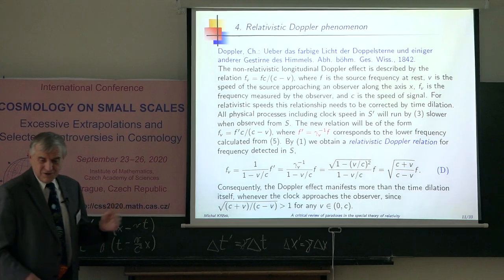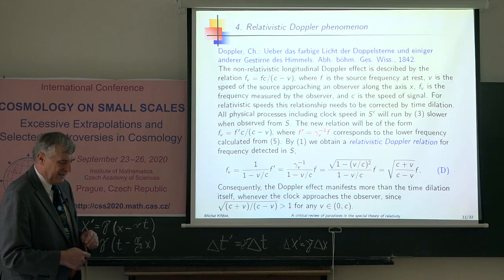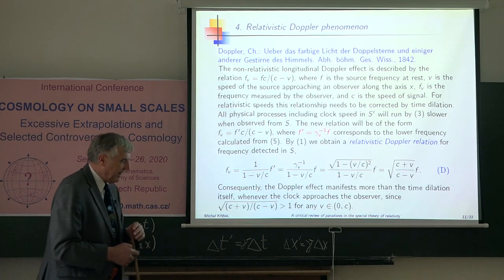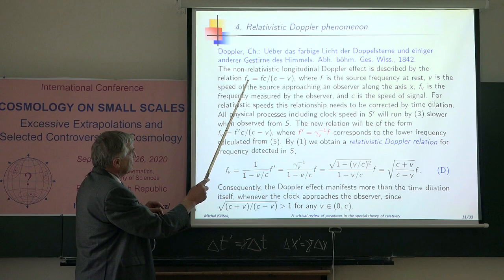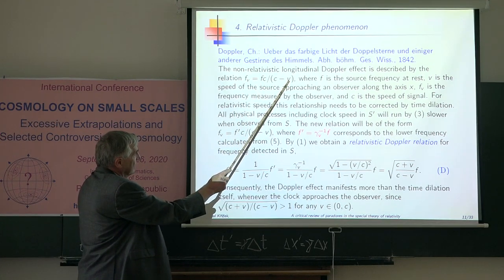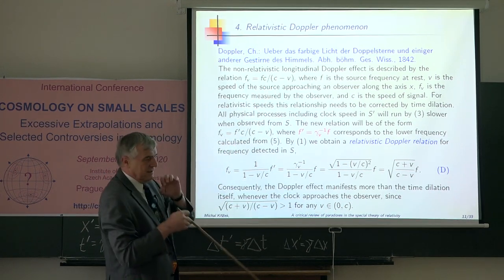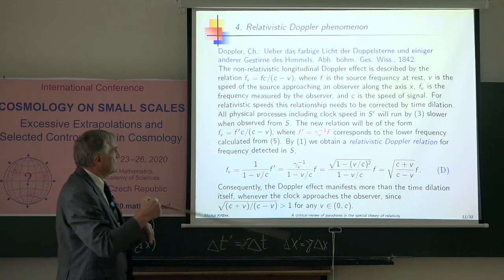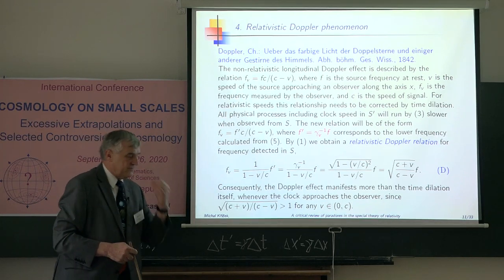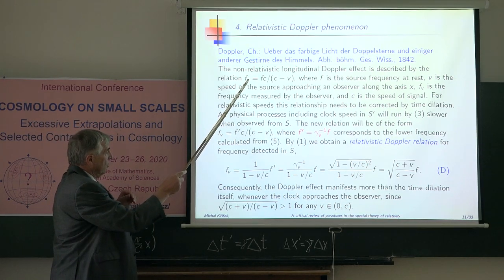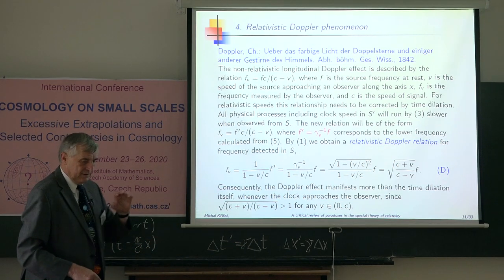Christian Doppler, when he was in Prague, had a very famous lecture about color light of binary stars. He derived such a formula for the change of frequency. See, speed of light, this is v, not the speed of light. It can be speed in some medium, but in our case it will be speed of light. There is a relation how the observed frequency will look like.